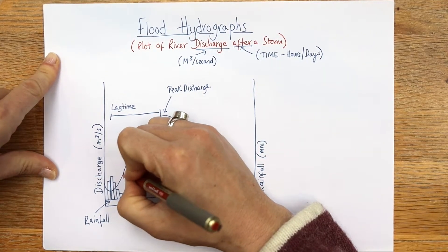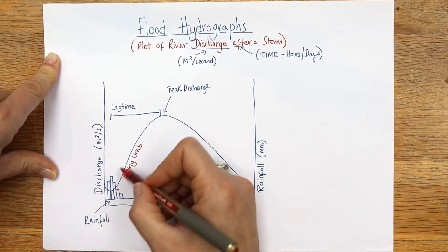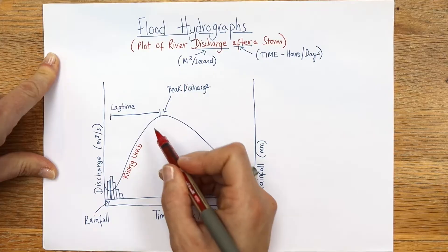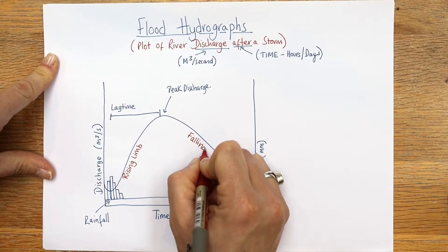Now this one is called the rising limb - limb is like a limb in your body, I'm not sure why they use that term but that's what it is, the rising limb - and then this one is known as the falling limb.